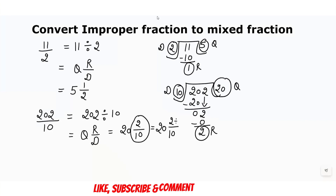Now you have to see that the fractional part should be in simplified form — here it is not. So we simplify: 2 divided by 2 gives 1, and 10 divided by 2 gives 5. Finally we get 20 and 1 over 5.